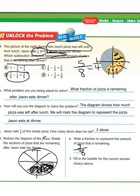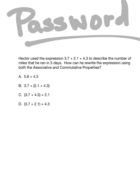Let's take a look at our exit ticket for today's lesson. Hector used the expression 3 and 7 tenths plus 2 and 1 tenths plus 4 and 3 tenths to describe the number of miles he ran in 3 days. How can he rewrite the expression using both the associative and commutative properties? The options are: A) 5 and 8 tenths plus 4 and 3 tenths, B) 3 and 7 tenths plus (2 and 1 tenths plus 4 and 3 tenths), C) (3 and 7 tenths plus 4 and 3 tenths) plus 2 and 1 tenths, or D) 3 and 7 tenths plus 2 and 1 tenths plus 4 and 3 tenths. Mark your answer and bring it to class tomorrow.